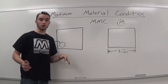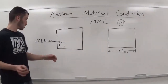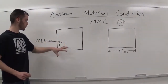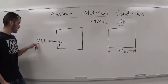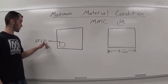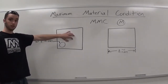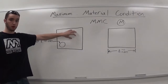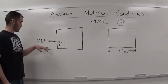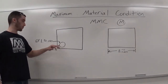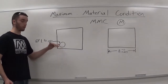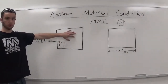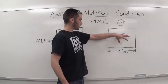MMC is where you have the most material in any given condition. Here on my blueprint I have a square with a hole in it, with a diameter of 1 inch and a tolerance of plus or minus 10 thou. In order to have the most material, we want this hole to be the smallest it can be — smaller hole means more material — so we'd want this hole to be 990 thou, making the hole as small as possible while staying within our tolerance.